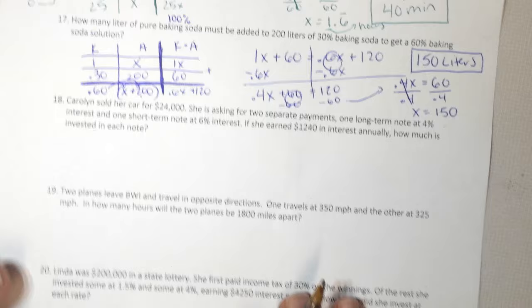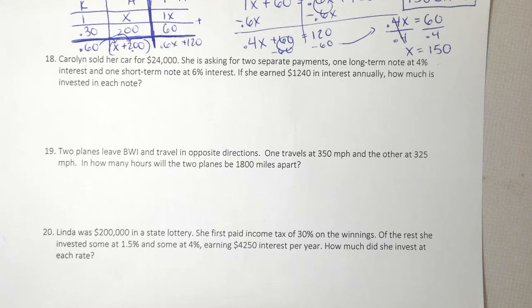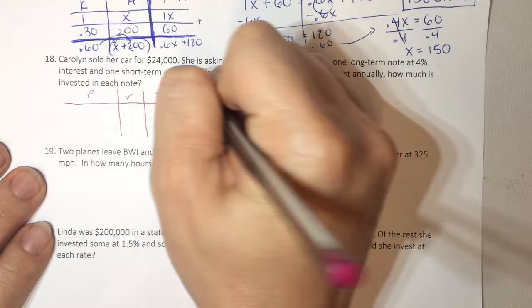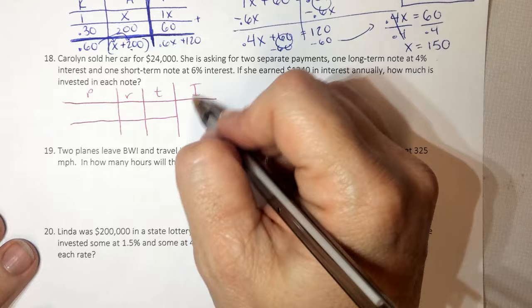Carolyn sold her car for $24,000. She's asking for two separate payments. One long-term note and one short-term note. Don't let those words throw you off. If she earned this much, so this is principal. This is investment. So I know P times R times T is my investment. And I know that I just cut the first three apart. That stays my big one.